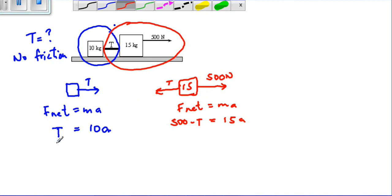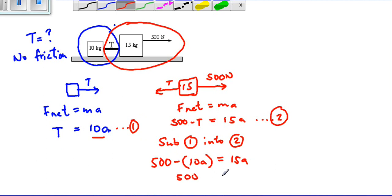When we see this, T equals 10A. So we call this equation 1 and this equation 2. If we substitute equation 1 into equation 2, we get 500 minus 10A equals 15A. This becomes 500 equals 25A.